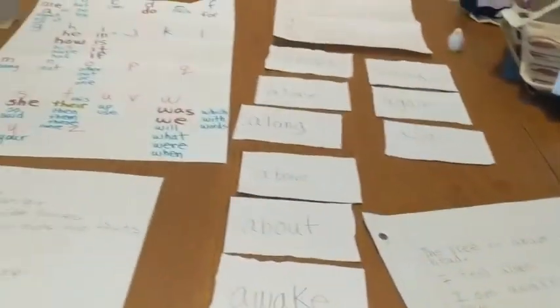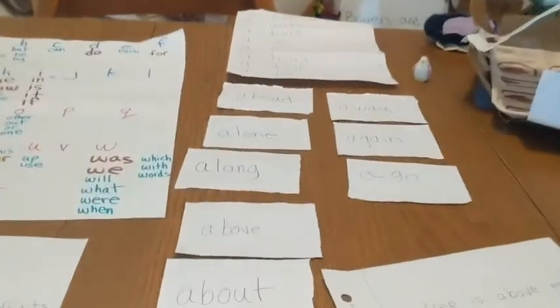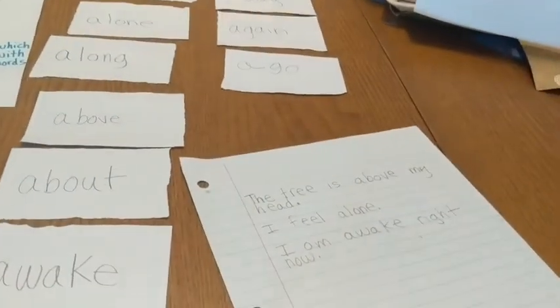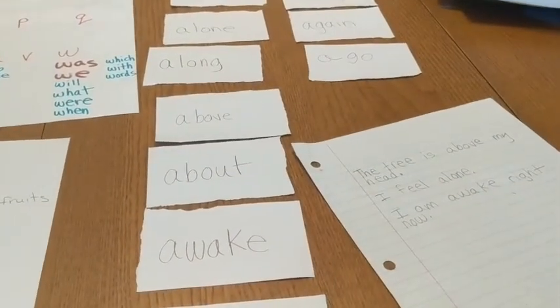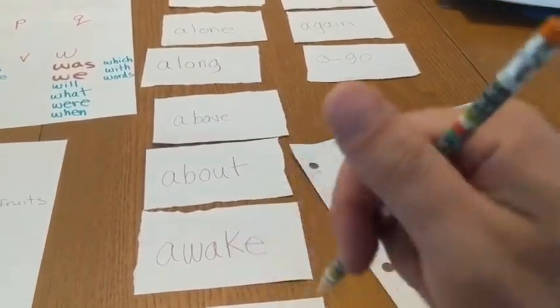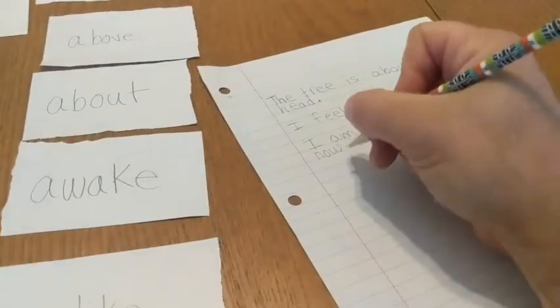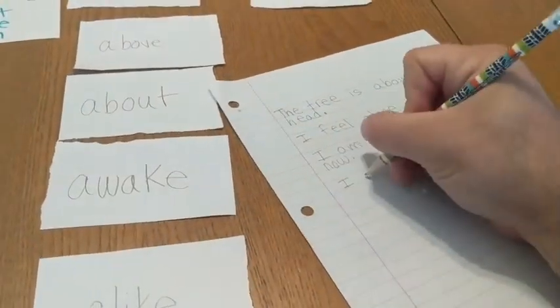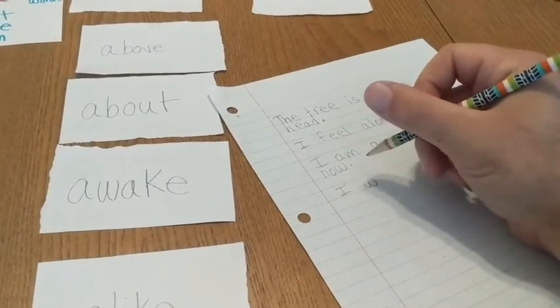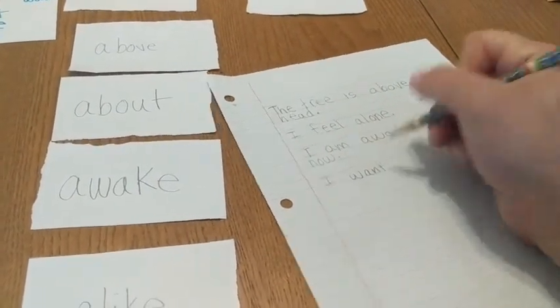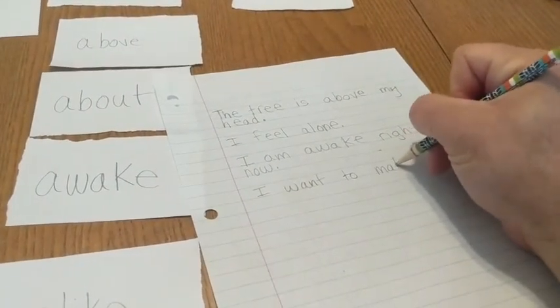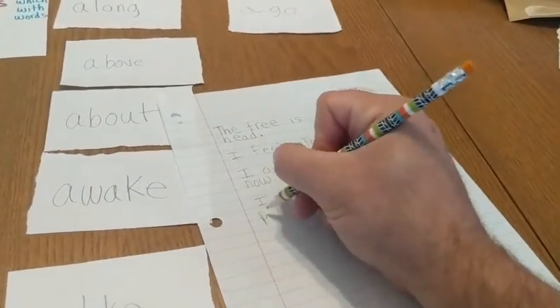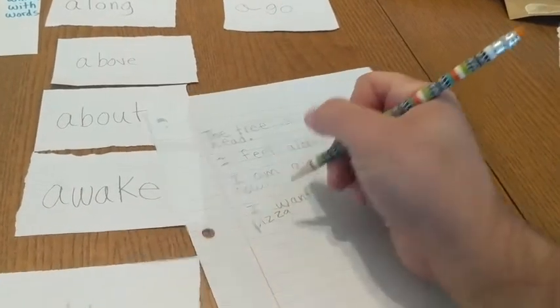So lots of things that we can do with our sentences that we're writing this morning. Maybe I want to write one about pizza. Do any of my 'A' words really go with pizza? You can't say 'I alike pizza,' that's not a sentence. 'Again' - I want to make pizza again.